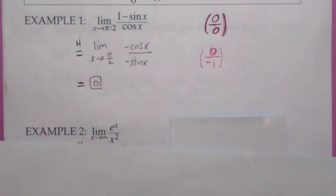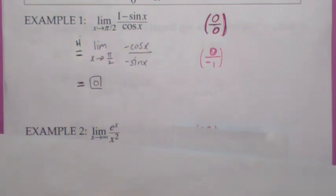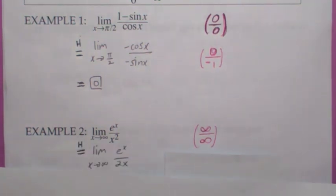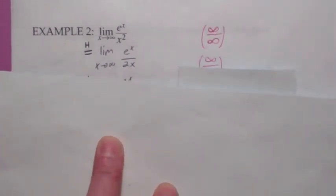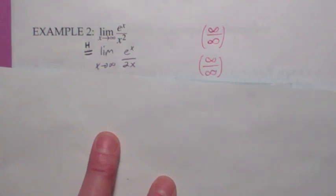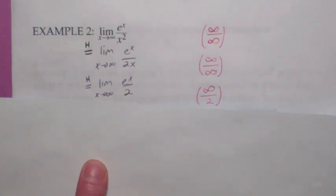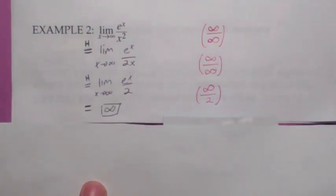Let's try another one. L'Hôpital's Rule can also be used when x is going to infinity — that's actually how you'll probably see it most in the future. The top is getting close to infinity, and so is the bottom, so we apply L'Hôpital's Rule and get the limit as x goes to infinity of e^x over 2x. That still has the infinity over infinity form, so we can apply L'Hôpital's Rule a second time. Taking derivatives again, the bottom is just 2, so the top goes to infinity and the answer is infinity.